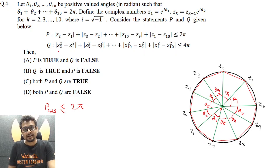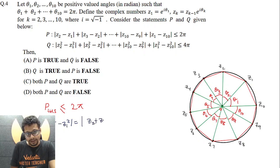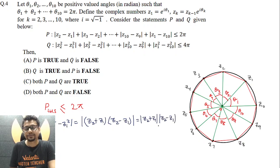Now coming to statement Q, here, let's consider the first term, mod Z2 square minus Z1 square. Can I say it is essentially Z2 plus Z1 multiplied by Z2 minus Z1? Basically, mod Z2 plus Z1 times mod Z2 minus Z1. Now we have already considered this mod Z2 minus Z1, mod Z3 minus Z2, all those things in statement P, considering its left hand side. This mod Z2 plus Z1 will be coming in the first term multiplied with mod Z2 minus Z1.